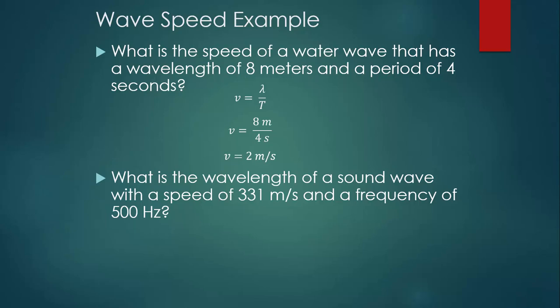Let's take a look at another example. What is the wavelength of a sound wave with a speed of 331 meters per second and a frequency of 500 hertz? This time, since we know the frequency, we'll write the wave speed equation that has frequency in it, v equals f lambda. We can plug in our speed and our frequency and when we divide both sides by 500, we can find out that the wavelength of this wave is 0.662 meters.